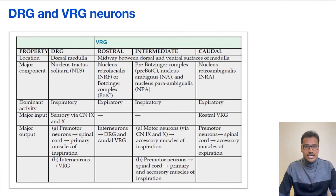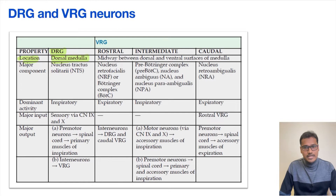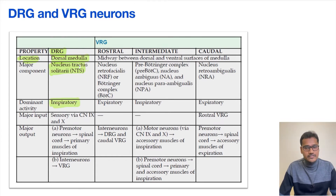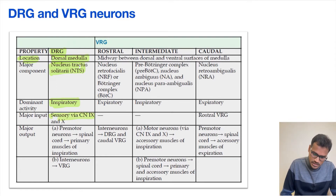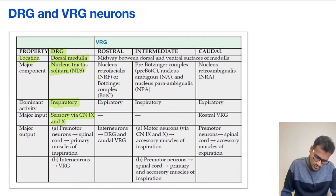Coming to the DRG and VRG neurons — first let's understand the DRG. The DRG is the dorsal group of neurons, so its location is in the dorsal medulla, and the major component is located in the nucleus tractus solitarius. The dominant activity of DRG is inspiration — it is an inspiratory group of neurons. The inputs to it are cranial nerves 9 and 10, and the major output goes through premotor neurons to the primary muscles of inspiration.